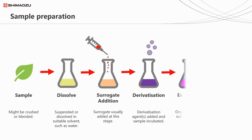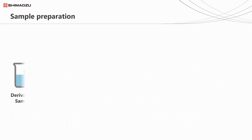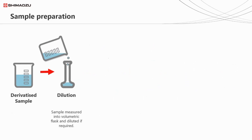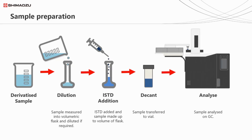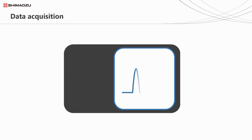Once this is done, we would typically extract our FAMES into a solvent that isn't miscible with the current solution — this could be a hexane extraction from water — and collect the organic phase. At this stage, we perform any necessary dilutions to ensure the concentration is suitable for the analyser. A known amount of internal standard is then added to a known volume of sample, and the resulting mixture is transferred into a vial ready for injection into the GC system. Data acquisition then generates a data file or files for us to process.